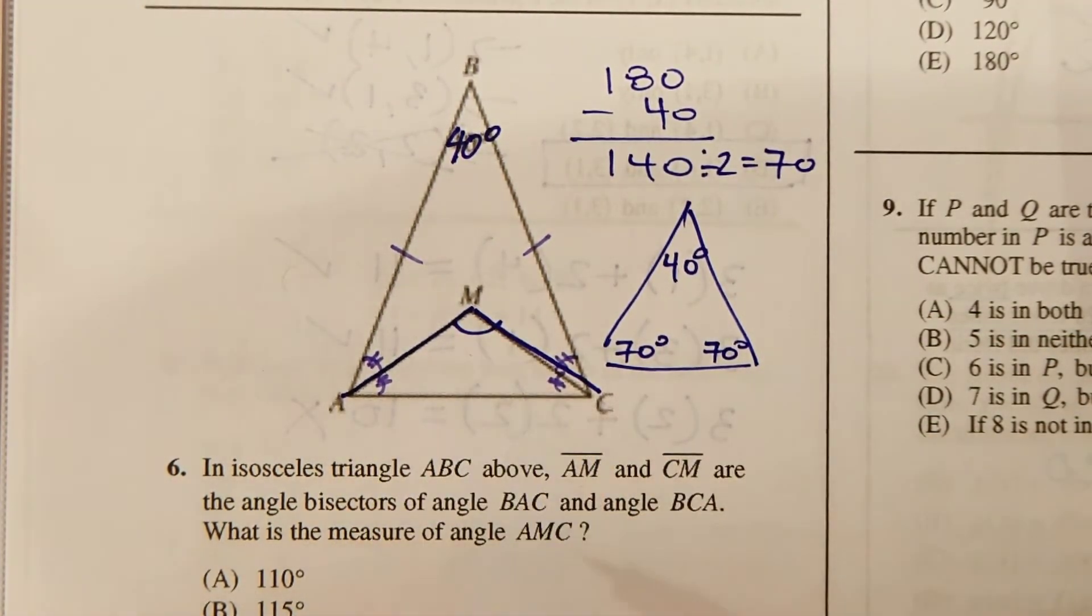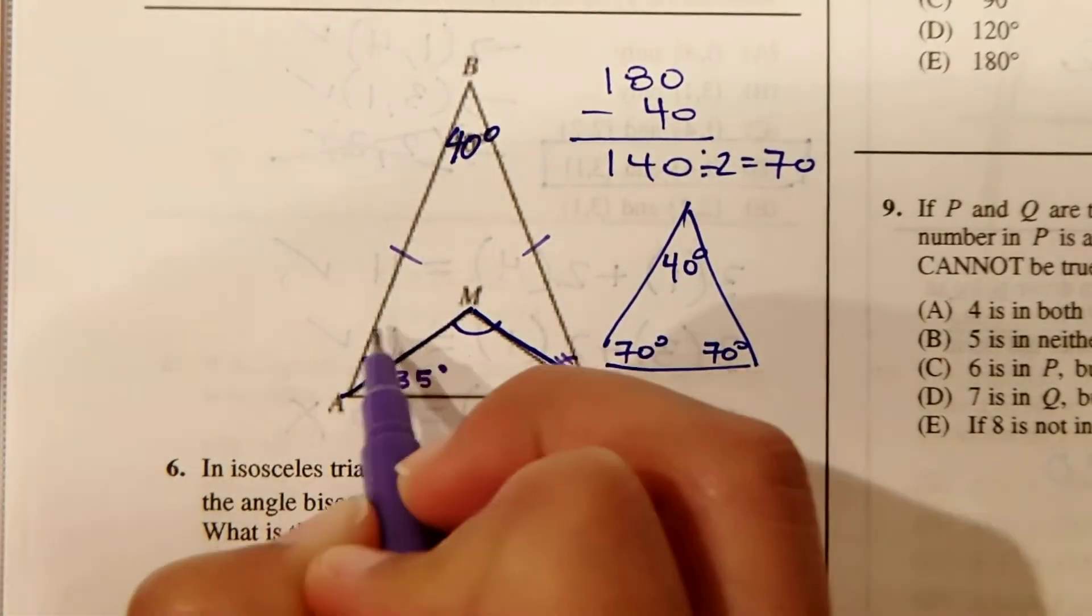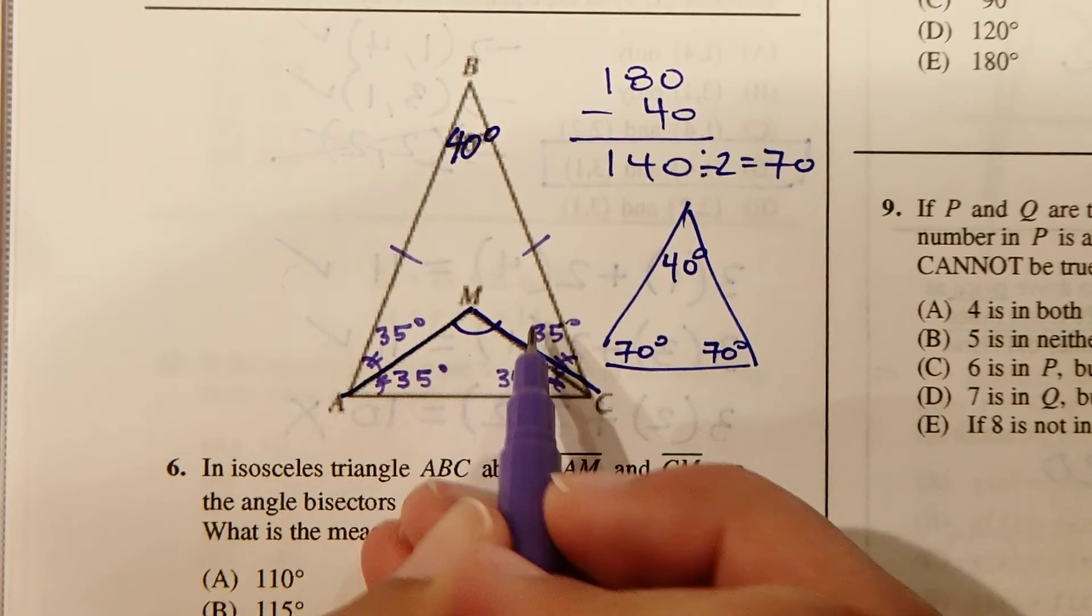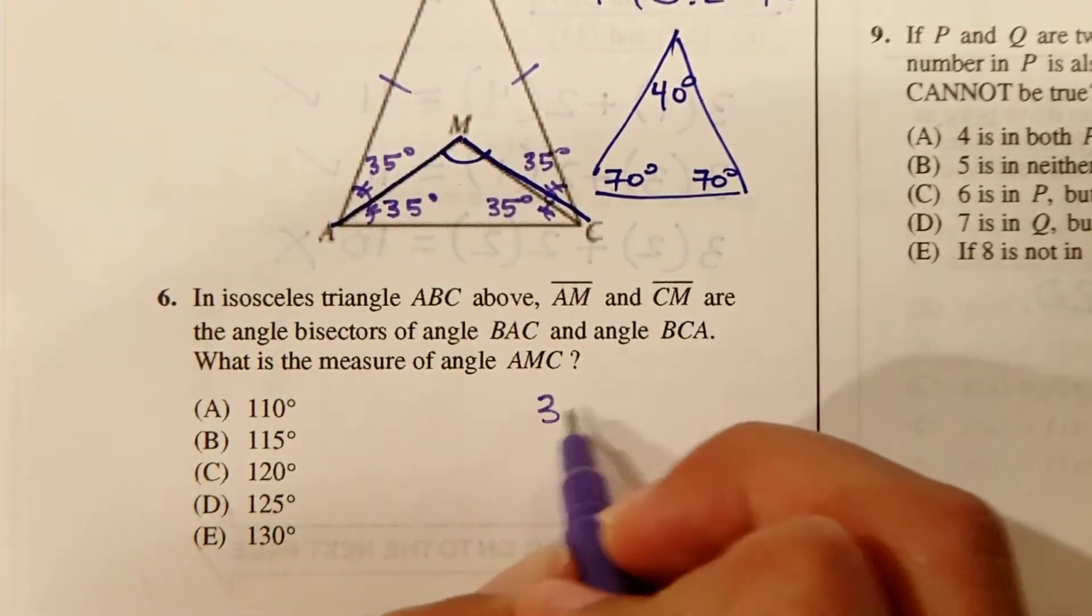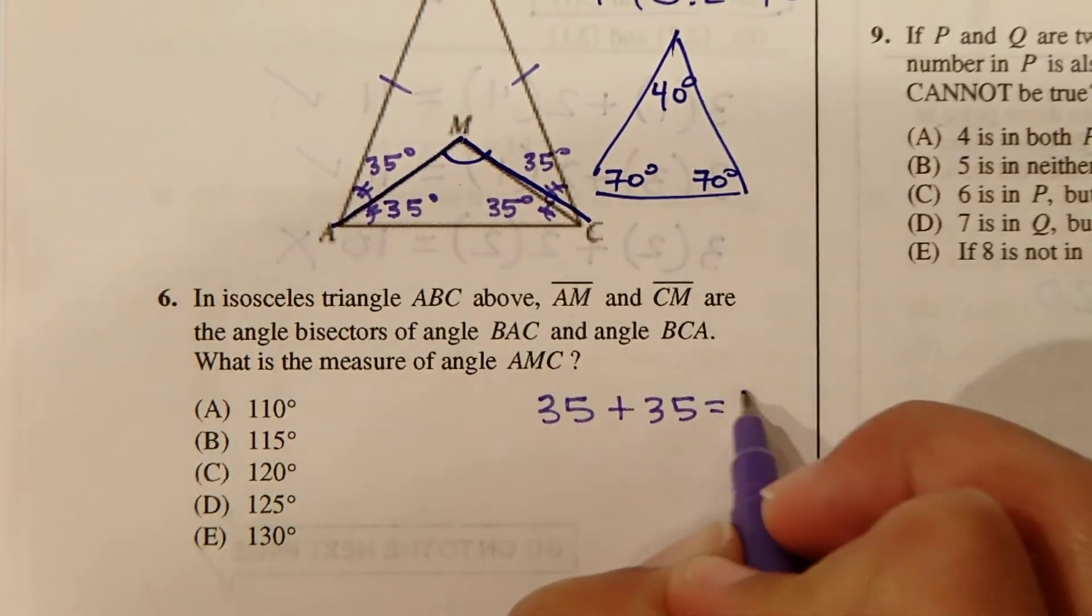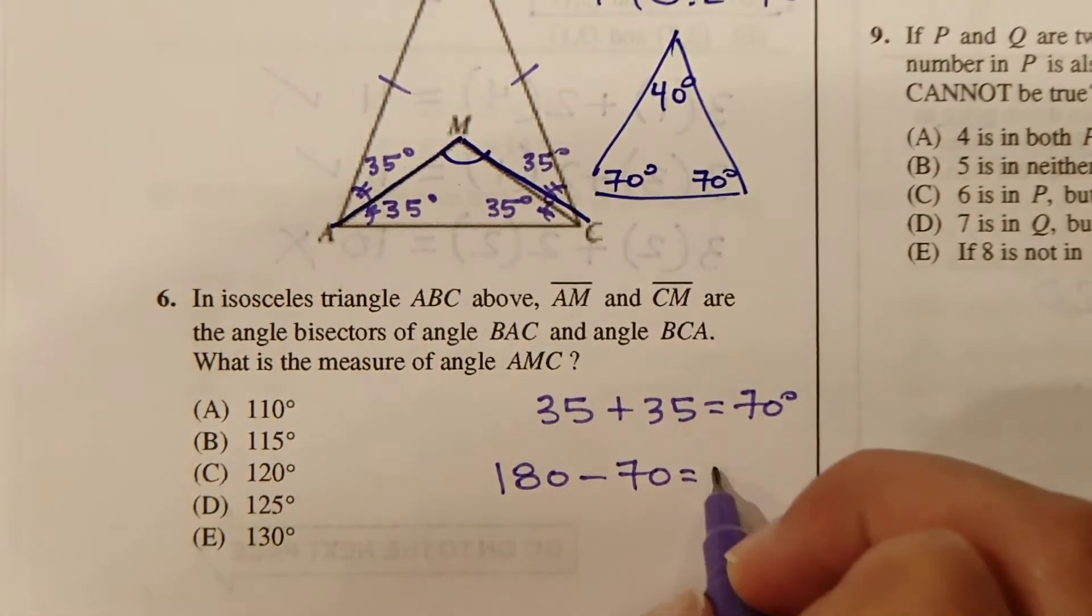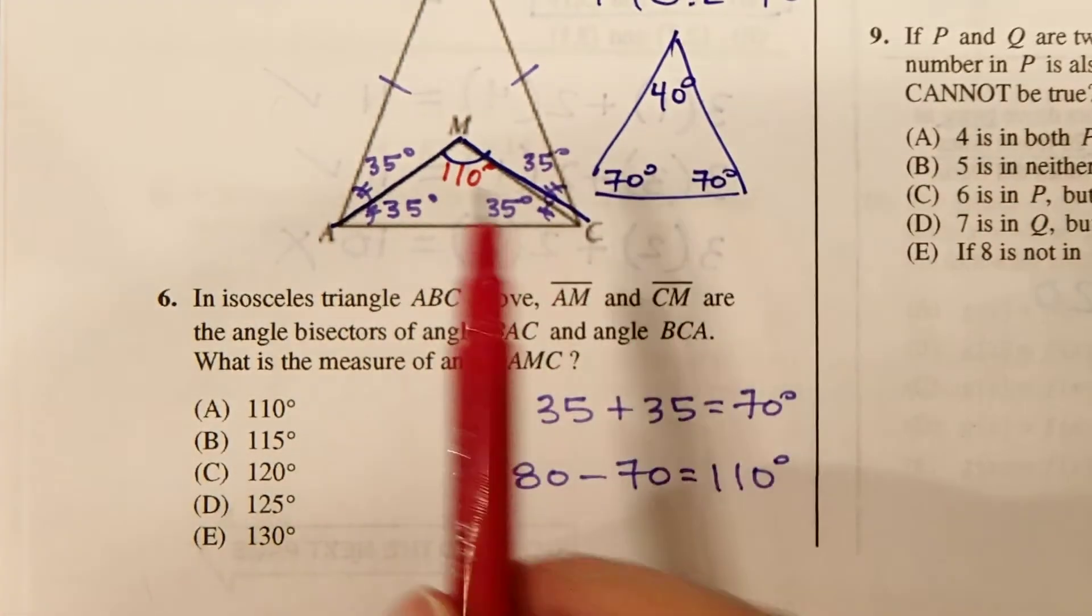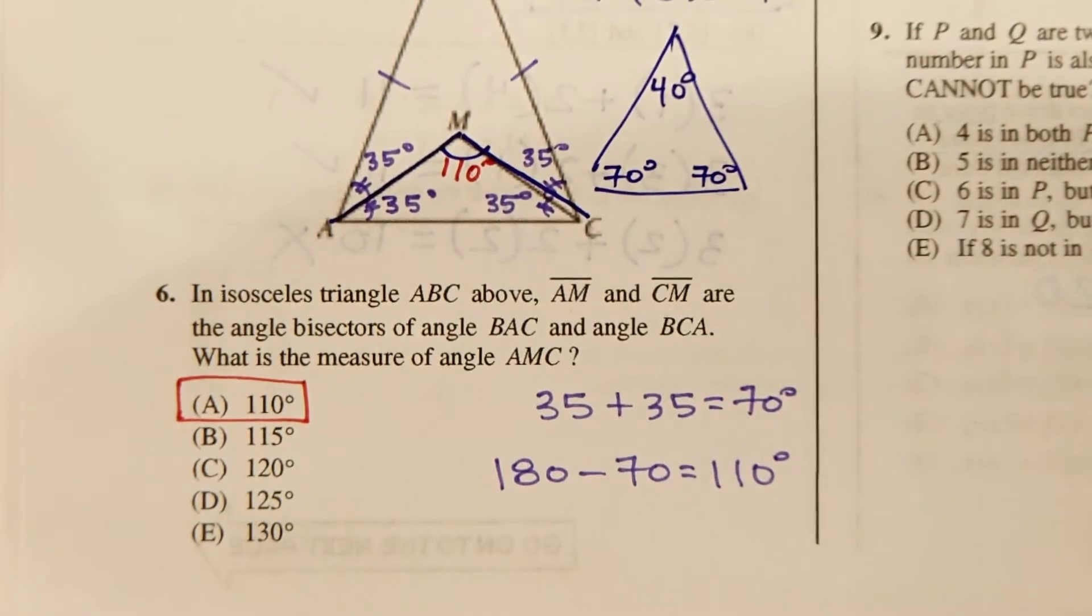Now, each one of these lines are angle bisectors. So that tells us that each one of these has to be 35, because total, it equals 70. So in order to find what angle M is, we can just say 35 plus 35 equals 70. And now we need to find the missing angle. So we're going to say 180 minus 70 equals 110 degrees. So this angle right here that we're looking for is 110 degrees in order to make this triangle 180 total. So our answer here is A, 110 degrees.